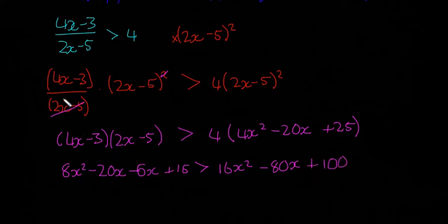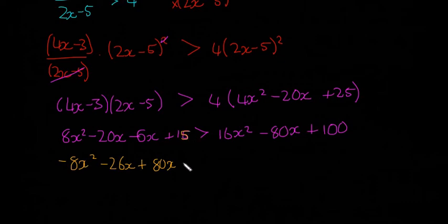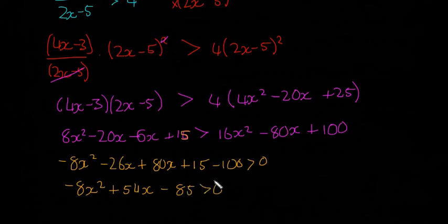So now it's just a little bit of algebra, we're going to get everything on the one side. So if it's 16 over, we're going to get minus 8x squared, then we're going to have minus 26x plus 80x is going to give us plus 54x, then plus 15 minus 100 is going to give us minus 85, all is greater than 0.